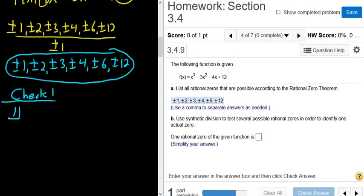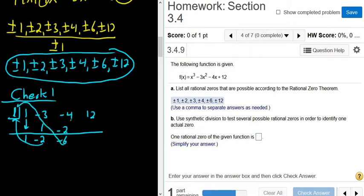And then you use synthetic division on this polynomial. So the coefficients would be 1, negative 3, negative 4, and 12. Those are the coefficients. Then you take this number and you bring it down. So 1. 1 times 1 is 1. Negative 3 plus 1 is negative 2. Negative 2 times 1 is negative 2. You add, you get negative 6. Negative 6 times 1 is negative 6. You add, you get 6. So this is not 0.